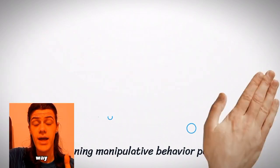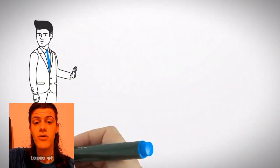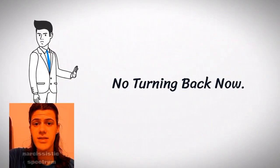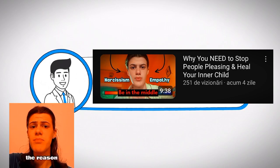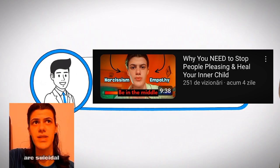By the way, I have another video on the topic of people pleasing, the empathy-narcissistic spectrum, and healing your inner child if you want to check that out. The reason people pleasers are suicidal is because they have built their identity around the lowest emotions on the consciousness scale.